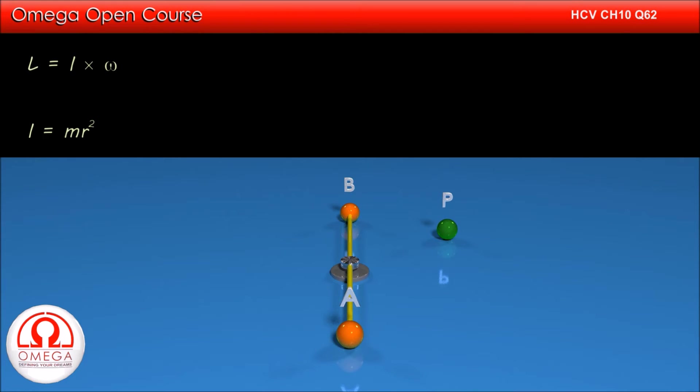Since before collision, only the balls are moving, for initial angular momentum, we need only the moment of inertia of the balls. Thus, the initial moment of inertia is 2 times M times (L/2) squared. Simplifying, we get ML squared by 2.